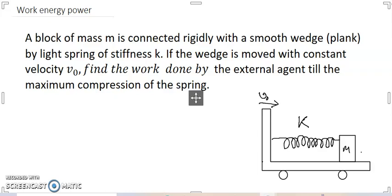Hello dear friends, welcome to my channel. A block of mass m is connected rigidly with a small plank by a light spring of stiffness k. If the wedge is moved with constant velocity v0, find the work done by the external agent till the maximum compression of the spring.